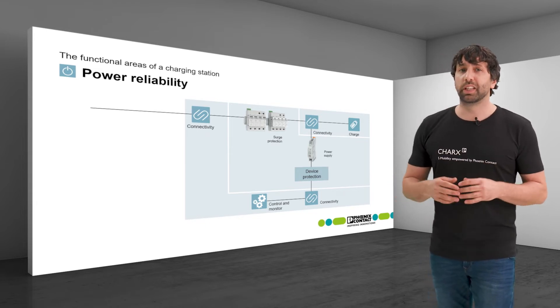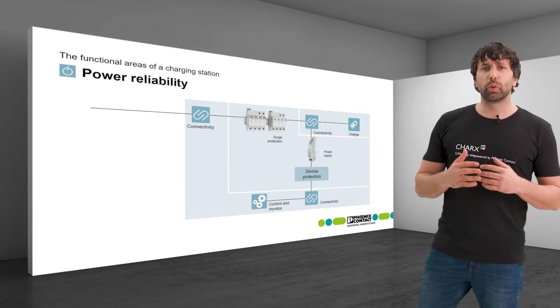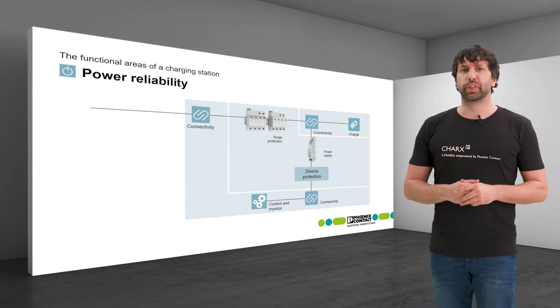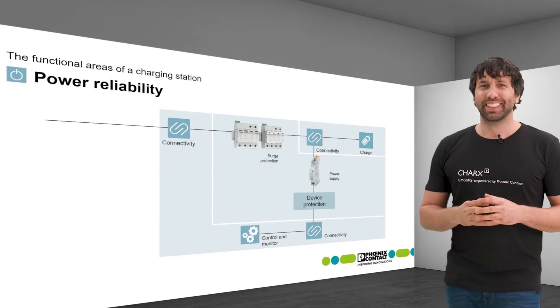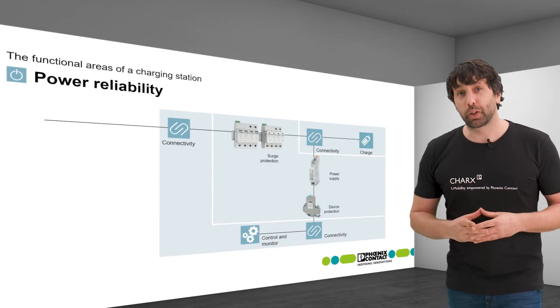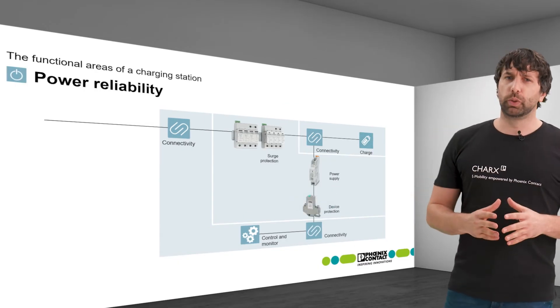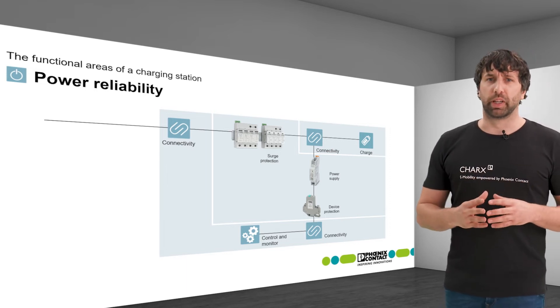In charging stations additional components and higher loads are added which increases the need for a device protection. A thermomagnetic device circuit breaker is the optimal solution here as it can be easily reset after tripping. Therefore it supports a high availability of the charging point.